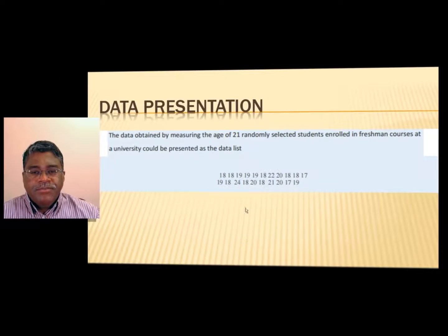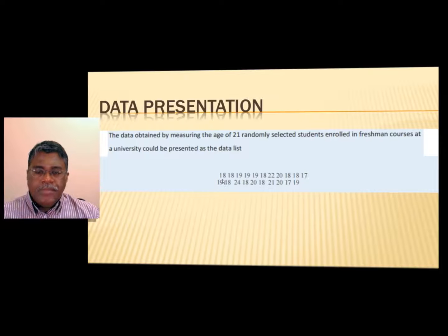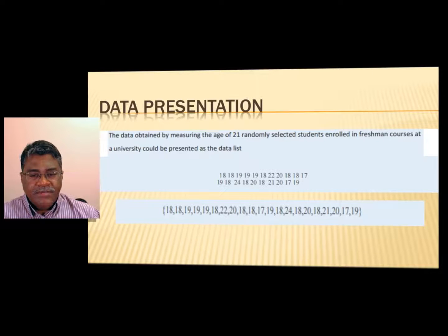What you see here is the age of 21 students presented at random: 18, 18, 19, 18, 20, etc., just presented at random. So how do you present this data? Well, one way is you can present it as a set with elements in the exact same order.